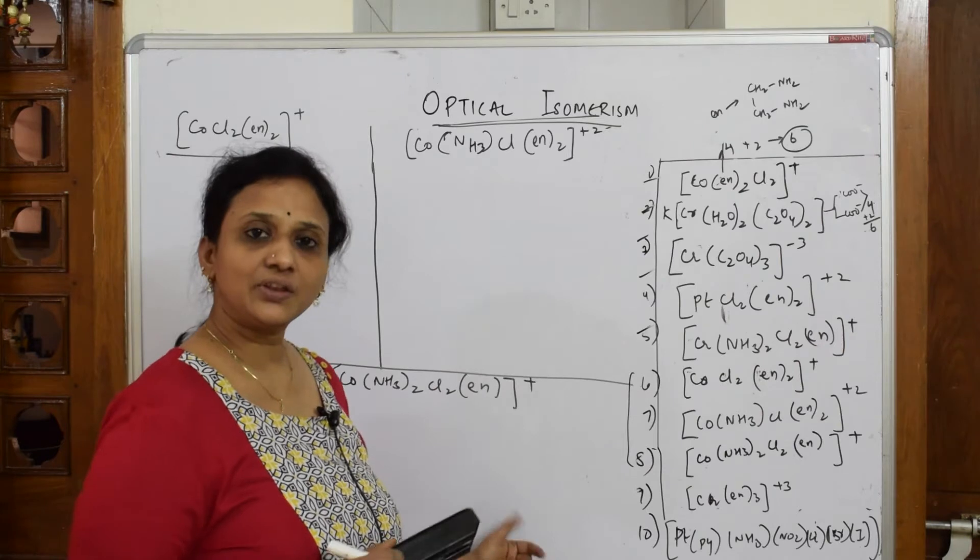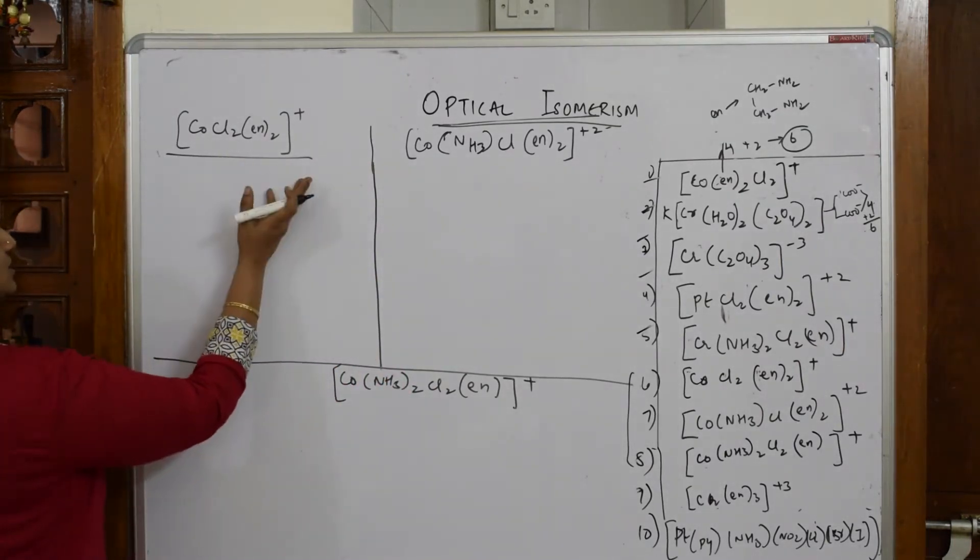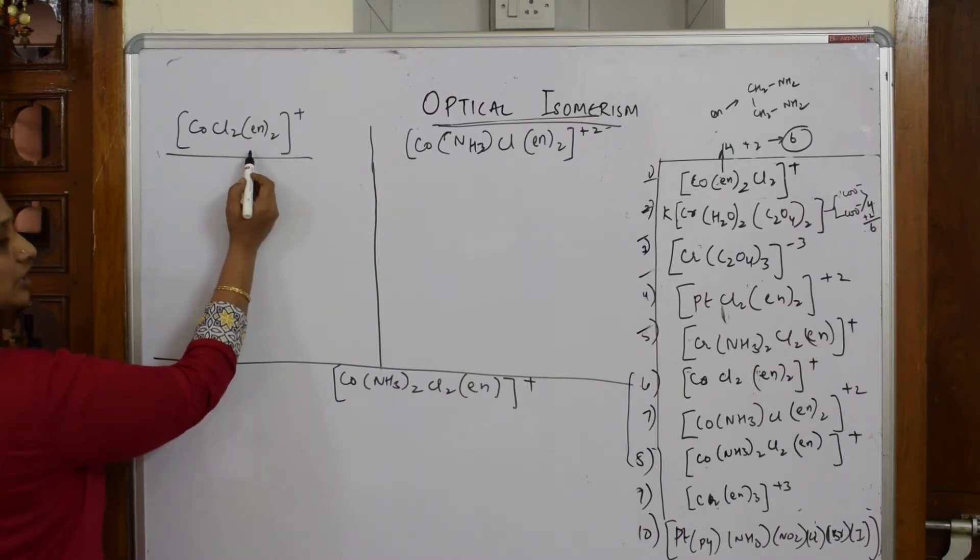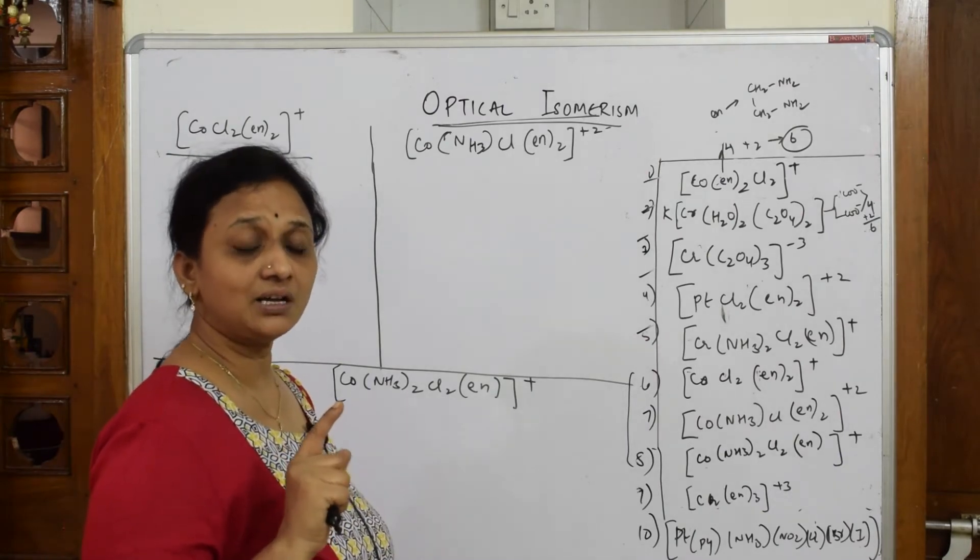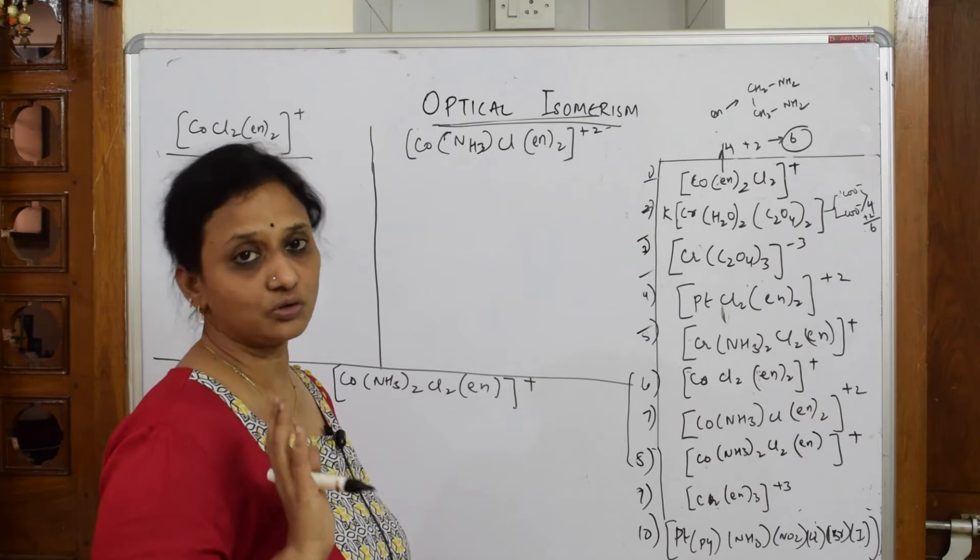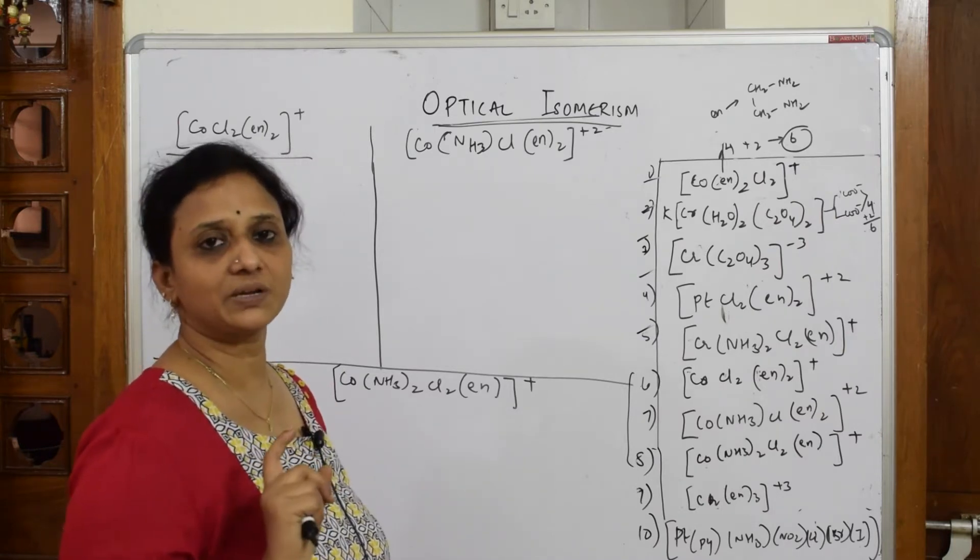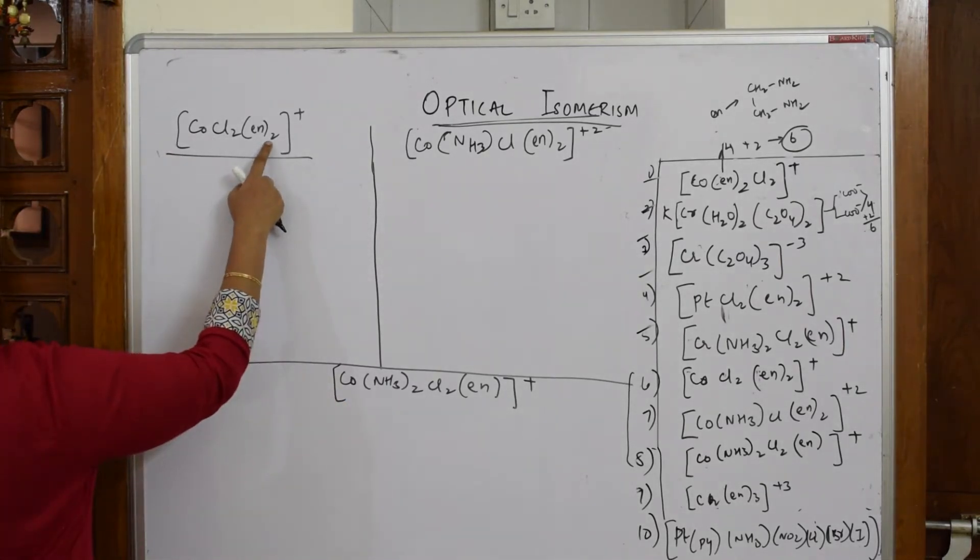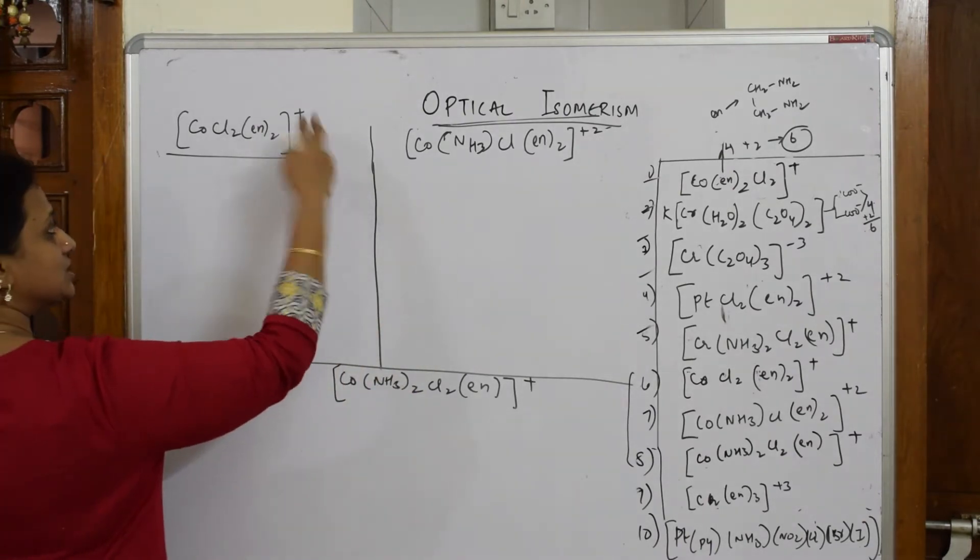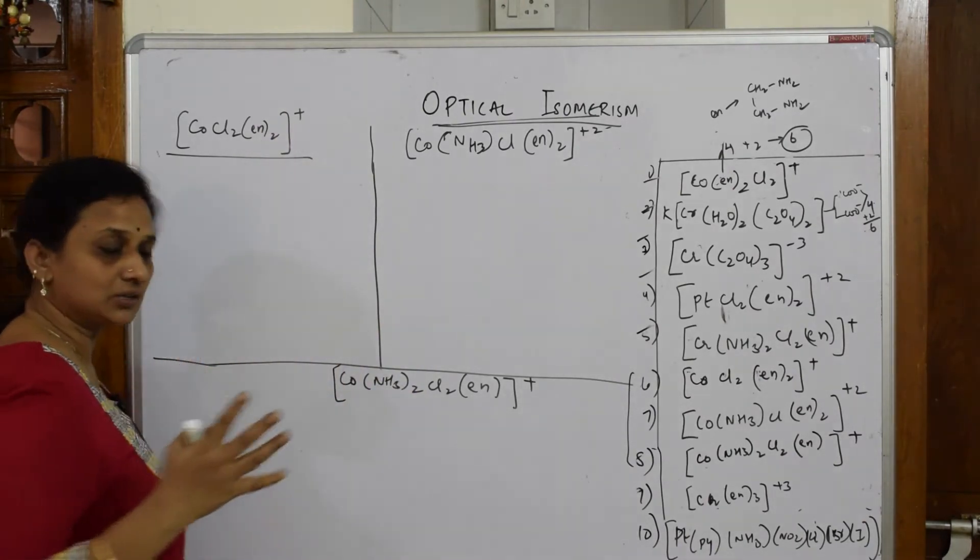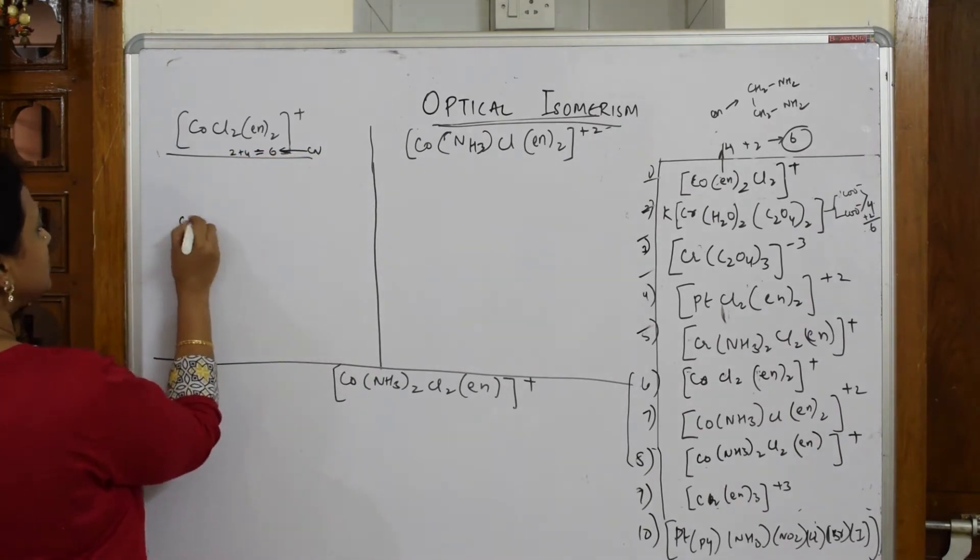I'll be drawing the trans also for this. Let's see. In this complex when I have to draw the cis isomer and trans, start here. First count whether the coordination number is 4 or 6, because square planar or tetrahedral coordination number 4 will rarely show optical activity. Coordination number 6 will compulsorily show optical activity. Here, ethylenediamine has two donor sites. Two ethylenediamines means four donor sites, so 4 plus 2 equals 6 coordination number.